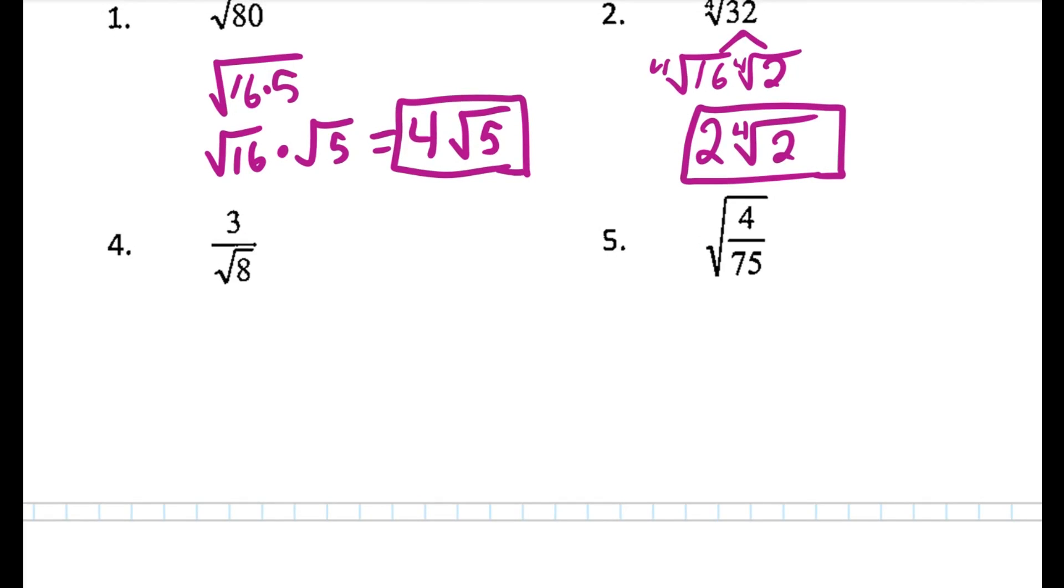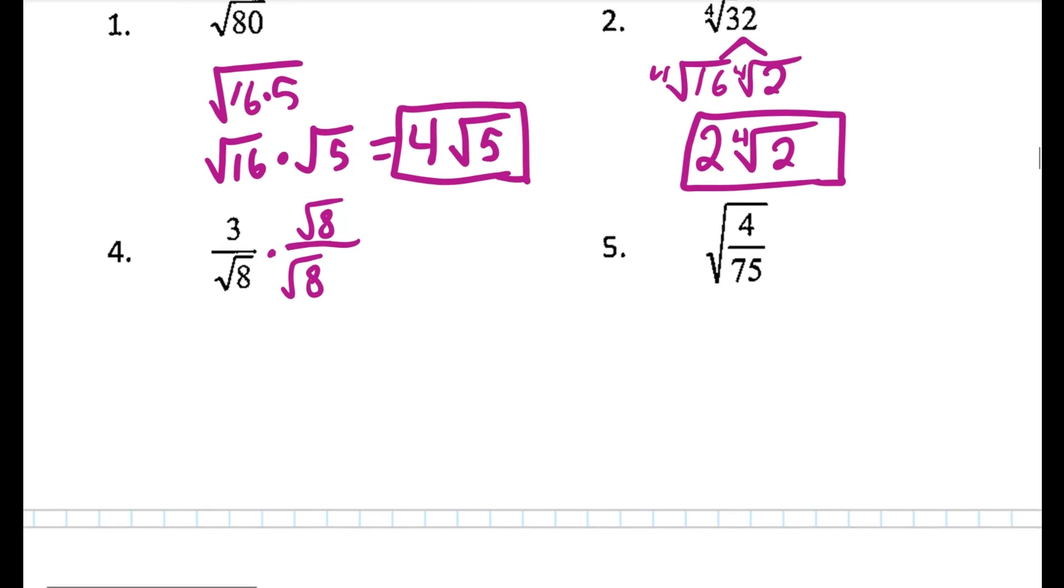The next one's written a little bit differently. We do have a square root on the bottom of a fraction, and that's a problem. We have something that's called an irrational denominator. So the very first thing is I'm going to get rid of the 8 in the denominator by multiplying by the same thing on top and bottom, because when you multiply by the same thing on top and bottom, you're multiplying by 1. So it doesn't change the fraction. And I get 3 square root of 8 over square root of 64.